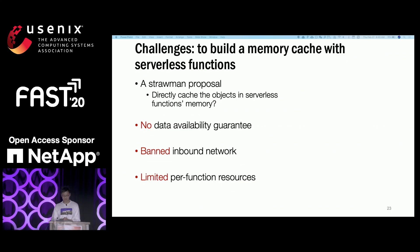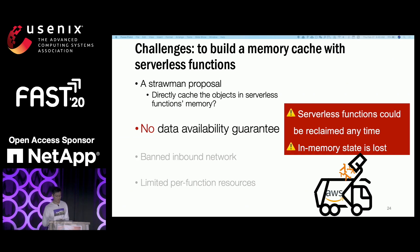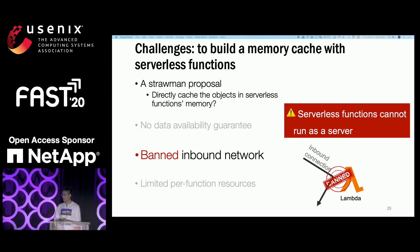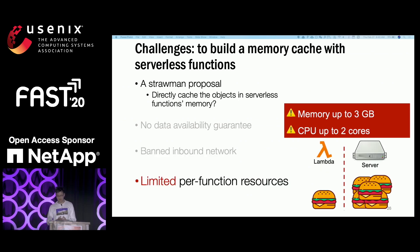Building such a caching system introduces challenges due to limitations of serverless computing. First, data availability cannot be guaranteed because cloud providers can reclaim serverless functions at any time and the in-memory state would be lost. Second, inbound networking is banned by serverless providers — you cannot treat a serverless function as a traditional server, so it is necessary to make each function connectable. Third, resources like memory, CPU, and bandwidth are limited — at most 3 gigabytes and two CPU cores in AWS Lambda.